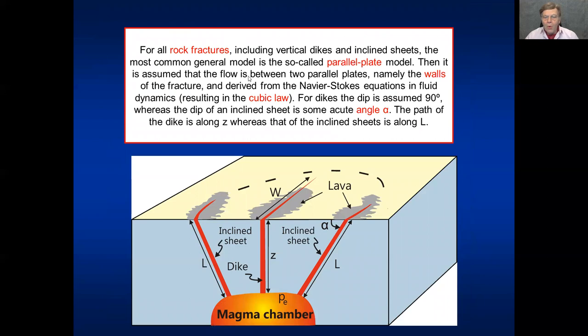So for all rock fractures, for groundwater, oil and gas, geothermal water, and magma, for all these fractures, when the fluids of these types are going through them, we use normally the parallel plate model. What does it mean? It means we assume the walls of the fracture to be parallel plates. And it comes from the Navier-Stokes equation for fluid in fluid dynamics and results in the cubic law. I come to that in a moment to explain to you.